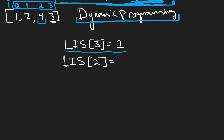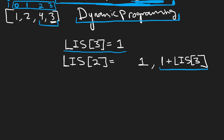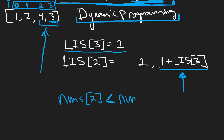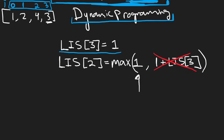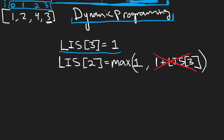How do we get the longest increasing subsequence starting at index two? One possibility is just four by itself — that's length one. Or it could be one plus the longest increasing subsequence starting at index three. But we're only allowed to do this if nums[2], which is four, is less than nums[3], which is three. Four is not less than three, so this condition is not satisfied. We only have one choice: one. So LIS[2] = 1.